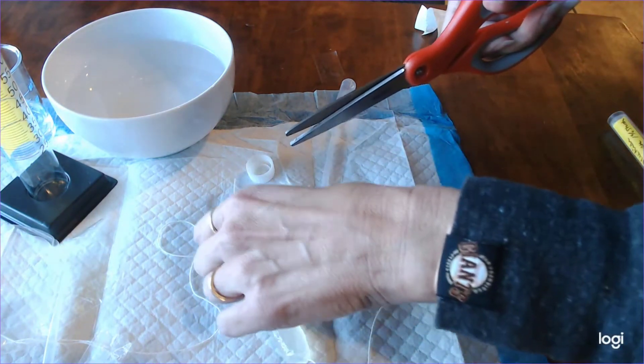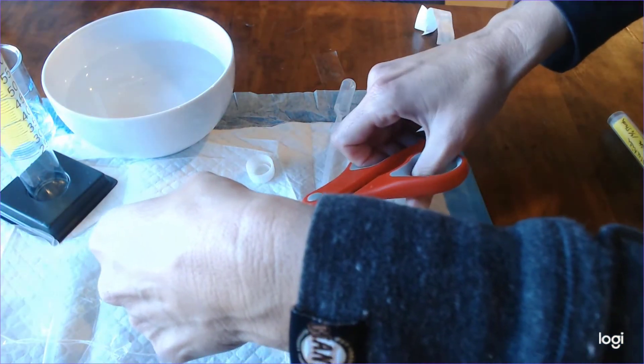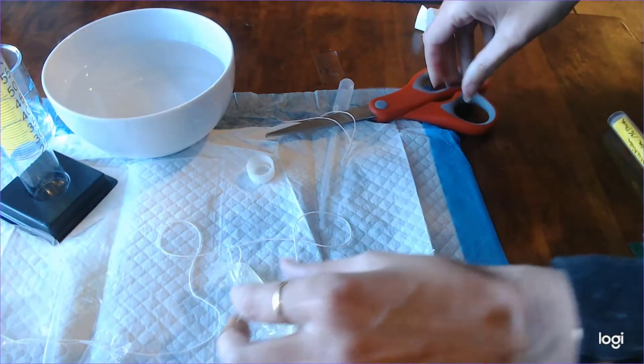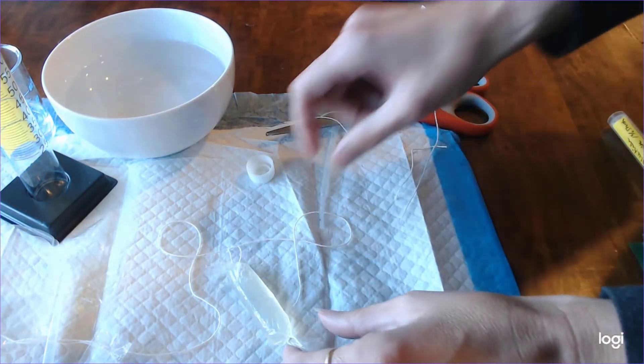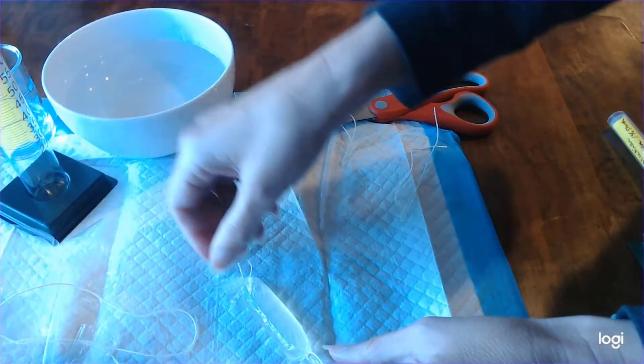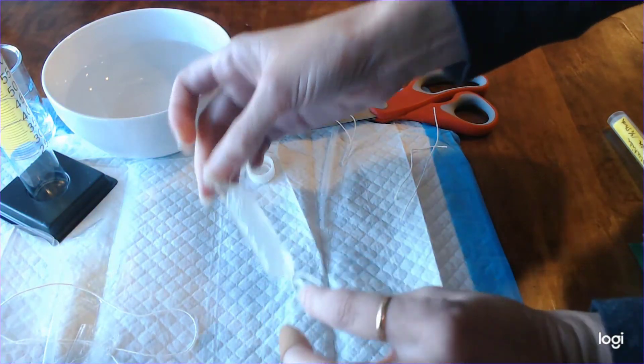Once you've tied that second knot go ahead and cut away some of the excess string and you can even cut away some of the excess dialysis tubing so that your final bag looks like what I show here.